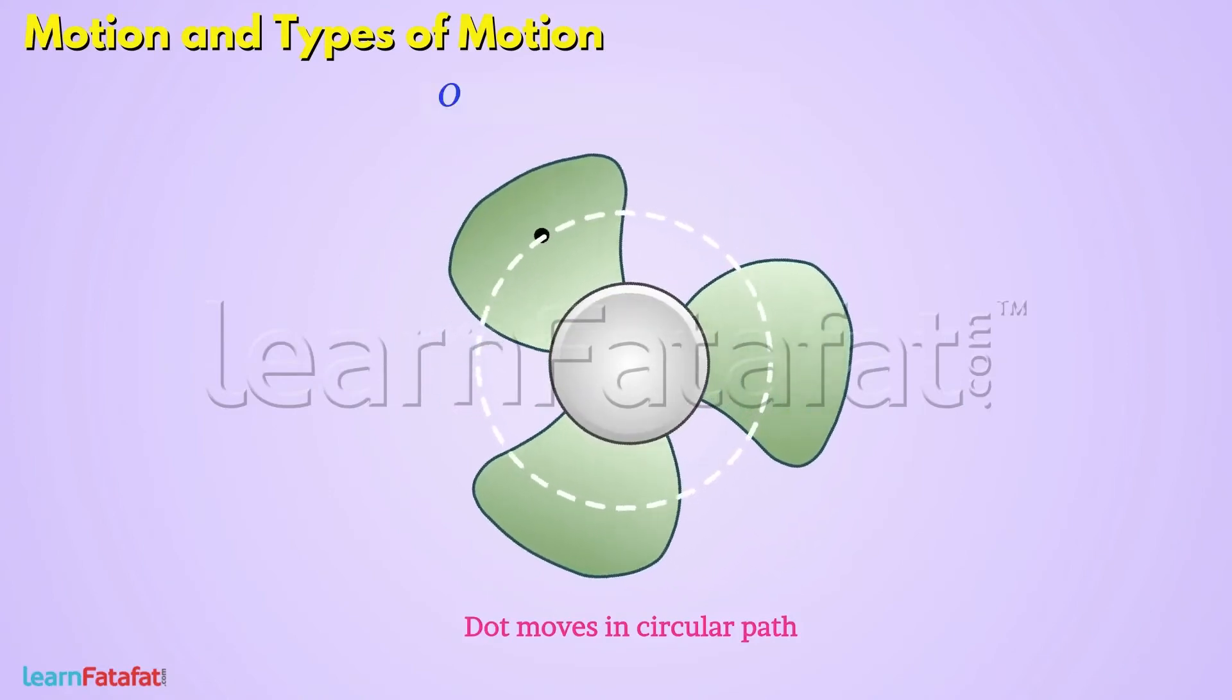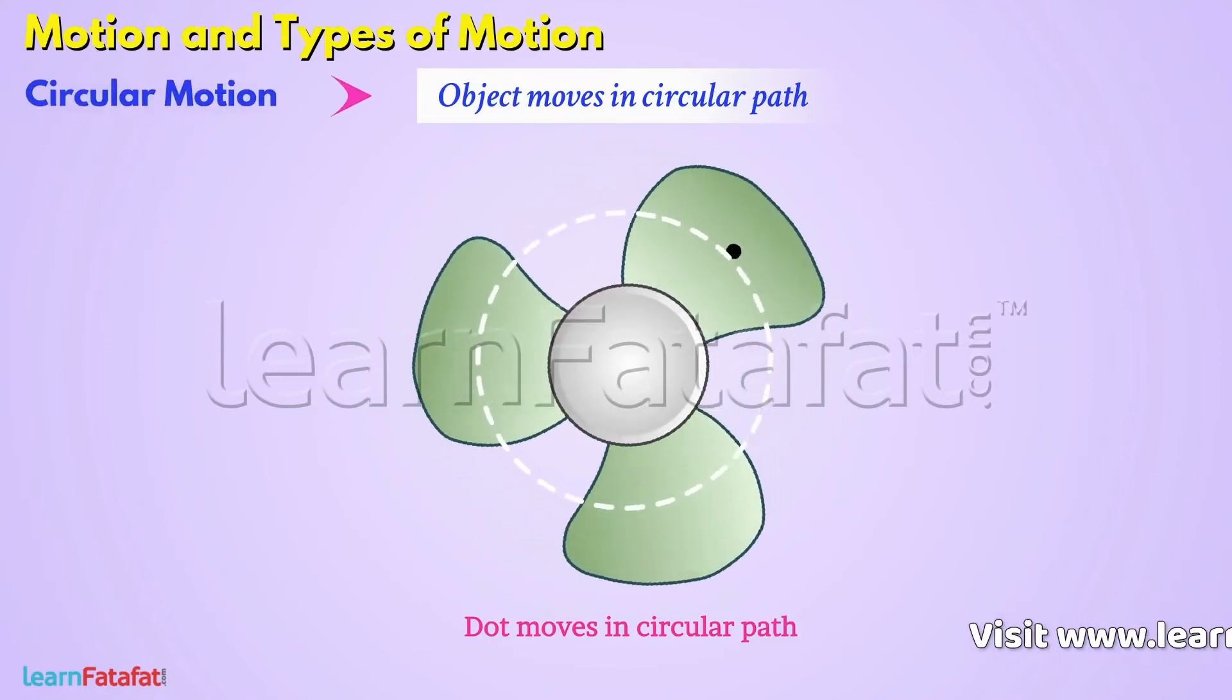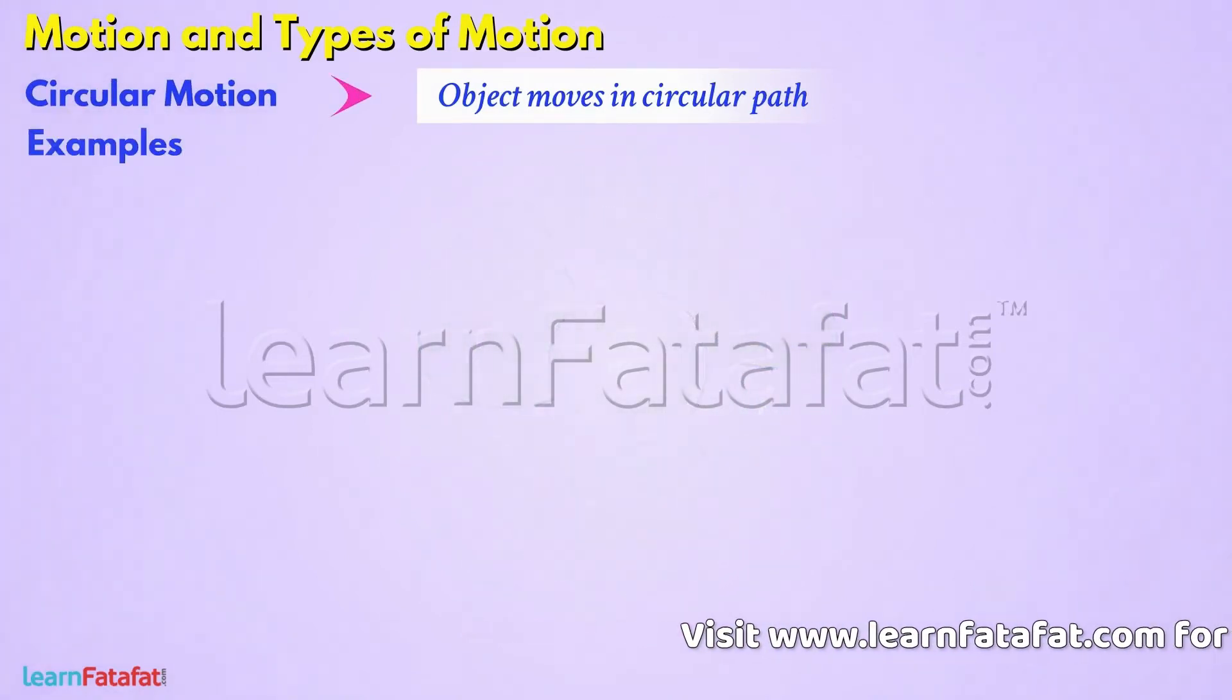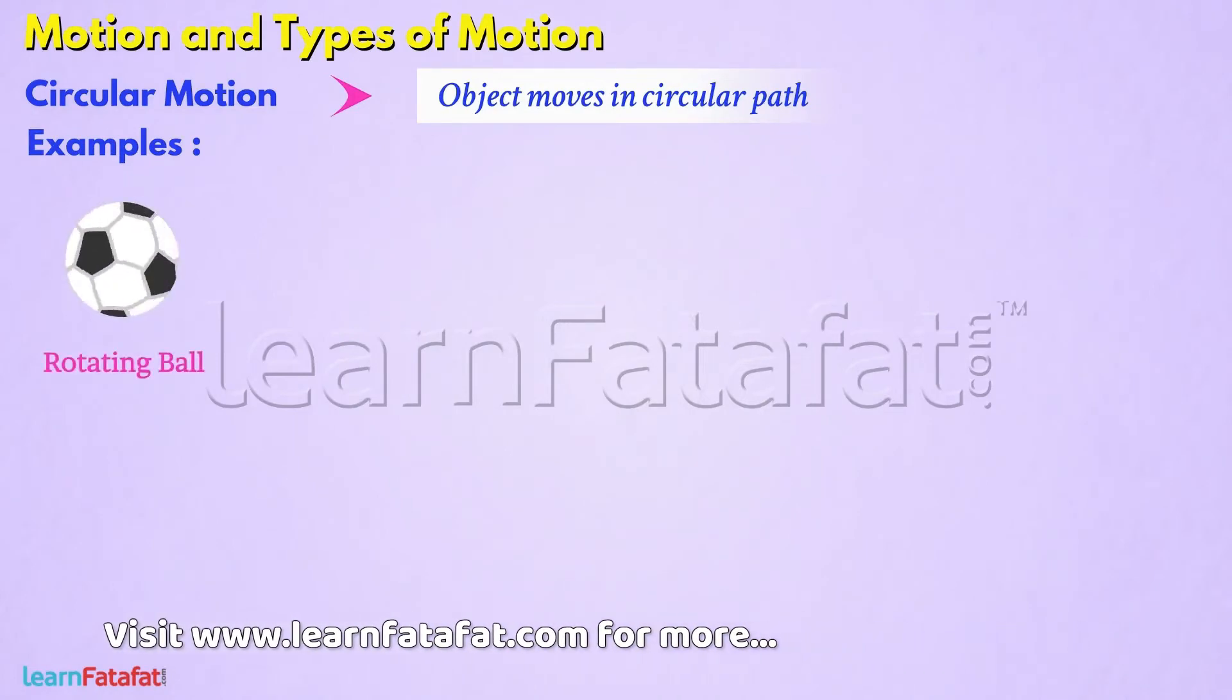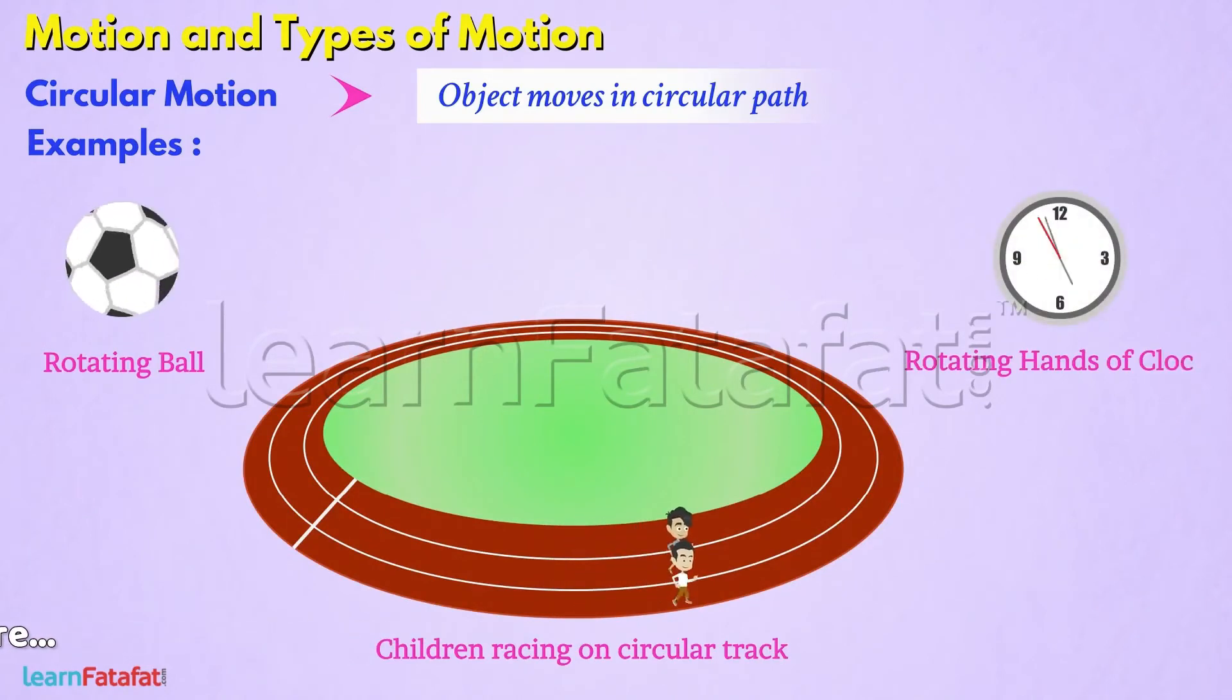Such a motion in which an object moves in a circular path is called circular motion. Other examples of circular motion are a rotating ball, children racing on a circular track, rotating hands of a clock, etc.